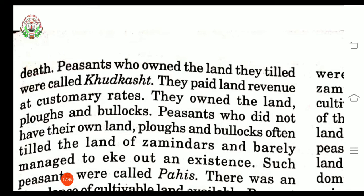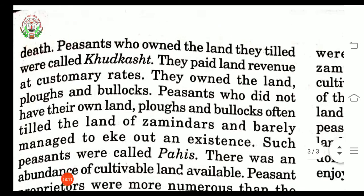There were two types of peasants. First, peasants who owned the land they tilled were called khudkasht, and they paid land revenue at customary rates. Customary rate means according to the custom. These peasants had their own land, plough and bullocks — everything was with them.